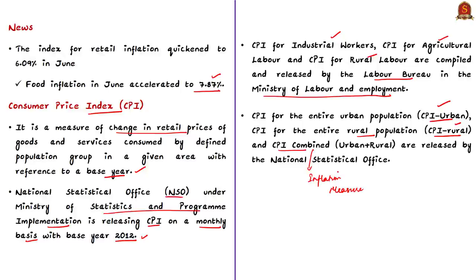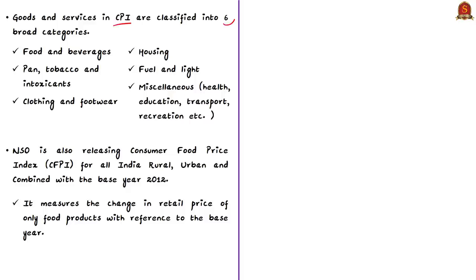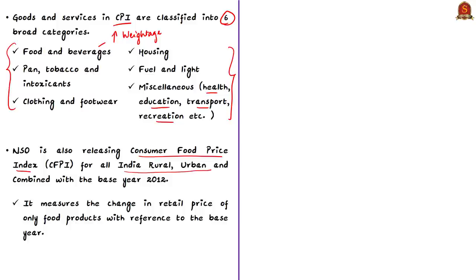For calculating the Consumer Price Index, goods and services are classified into six broad categories: food and beverages, pan, tobacco and intoxicants, clothing and footwear, housing, fuel and light, and miscellaneous — which includes health, education, transport, and recreation. Out of all these, food and beverages have the highest weightage in CPI estimation. The NSO also releases the Consumer Food Price Index (CFPI) for all-India rural, urban, and combined, with base year 2012, measuring the change in retail price of food products only.